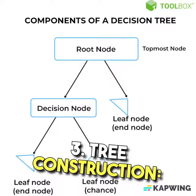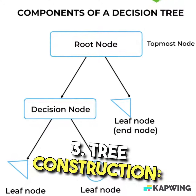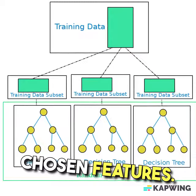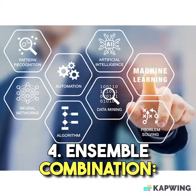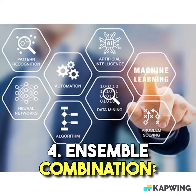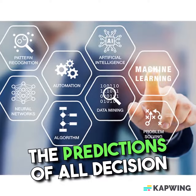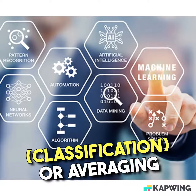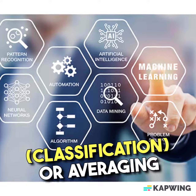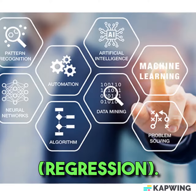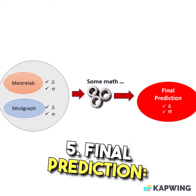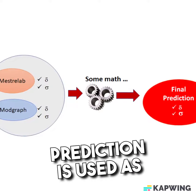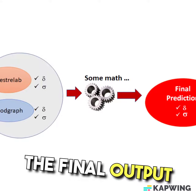3. Tree Construction: decision trees are built for each subset using the chosen features. 4. Ensemble Combination: the predictions of all decision trees are combined using voting (classification) or averaging (regression). 5. Final Prediction: the ensemble's combined prediction is used as the final output.